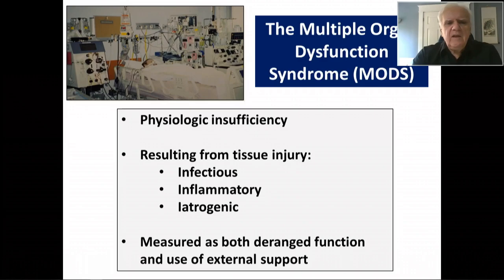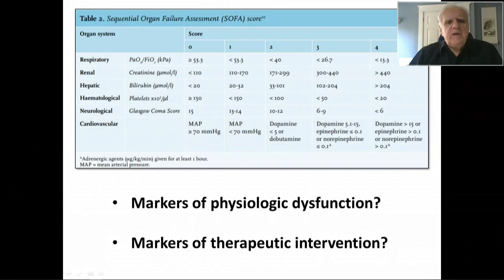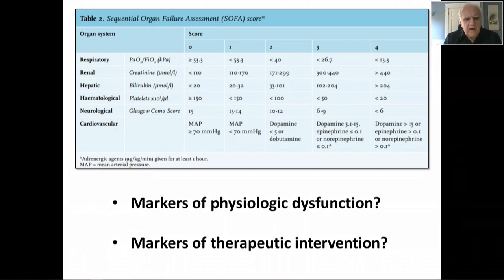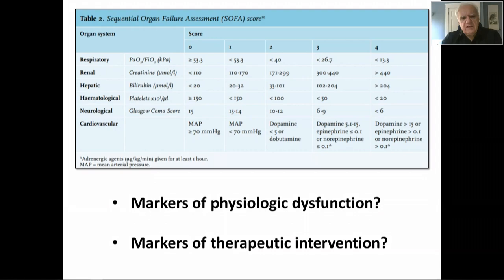This is a particularly important concept because we conflate the physiologic derangement with the response to that derangement by the doctor. We measure organ dysfunction both as the deranged physiology and as the response of the doctor. For example, if you look at the sequential organ failure assessment score, you'll see that the six systems described are described partly in terms of physiologic dysfunction — the defect in oxygenation reflected in the PO2/FIO2 ratio, or the increase in bilirubin as a marker of hepatic dysfunction — but also as what the doctor does to treat this: the provision of excess oxygen for respiratory support, or the use of vasopressor agents to support cardiovascular dysfunction. The problem, of course, is that this is not a state of the patient; it is a decision of the doctor, and that decision may vary dependent on who the doctor is and where he or she is practicing.